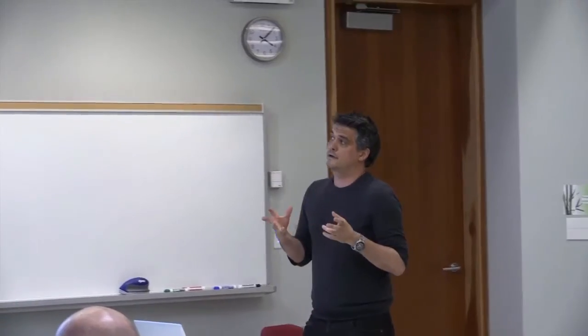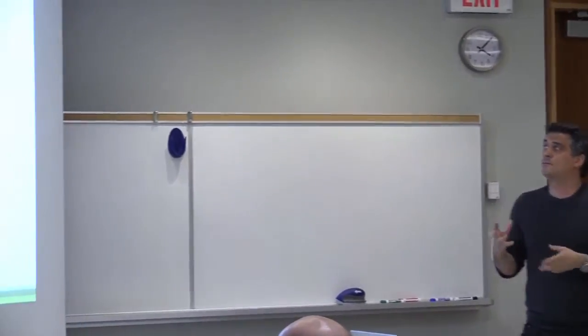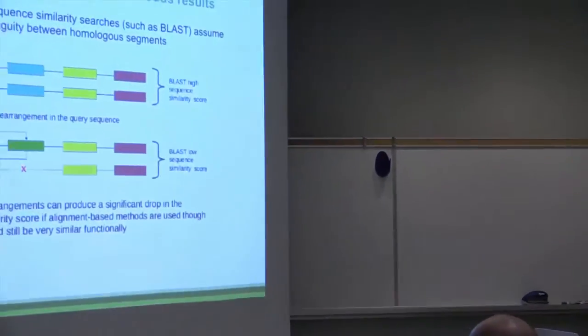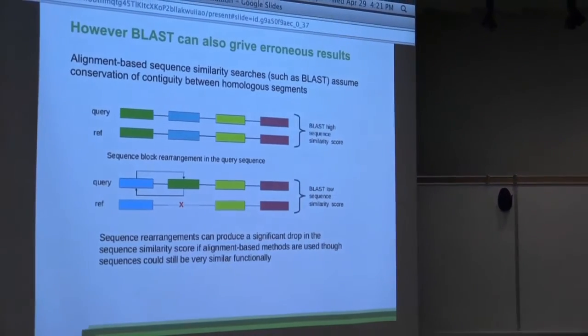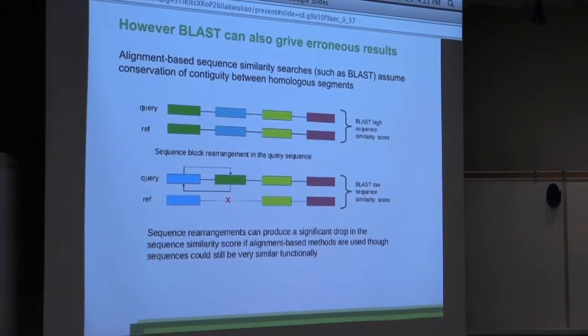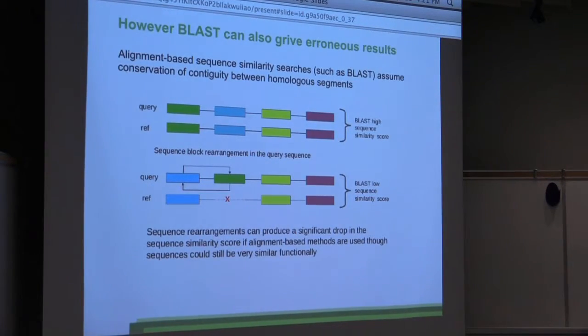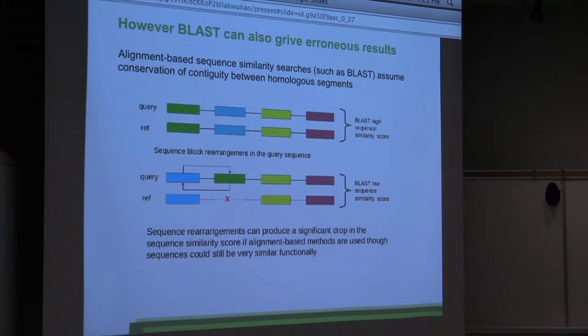However, BLAST can also give erroneous results because BLAST assumes a conservation of contiguity between homologous segments in the sequence. So if you have a query and reference, the blocks here are these homologous segments. If I now switch the blocks around, the BLAST would give a relatively low similarity score, and you would think that maybe these two sequences have nothing in common, although these two sequences can be actually very similar in function.